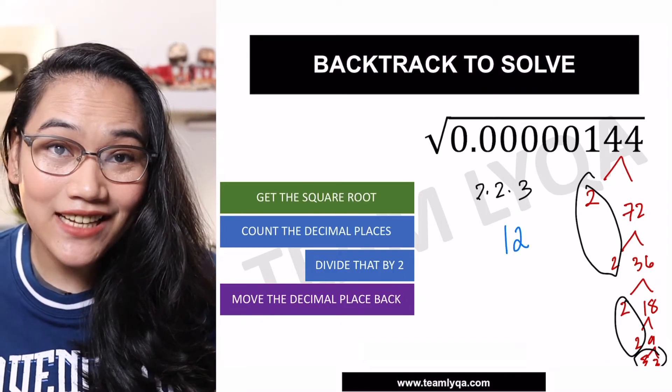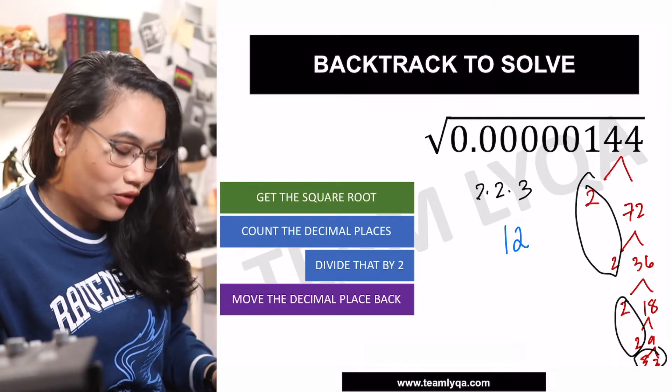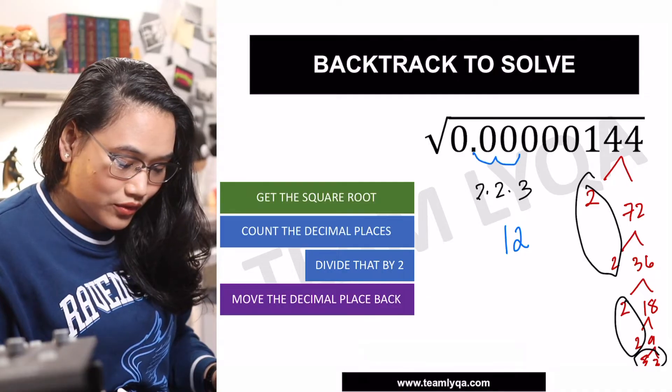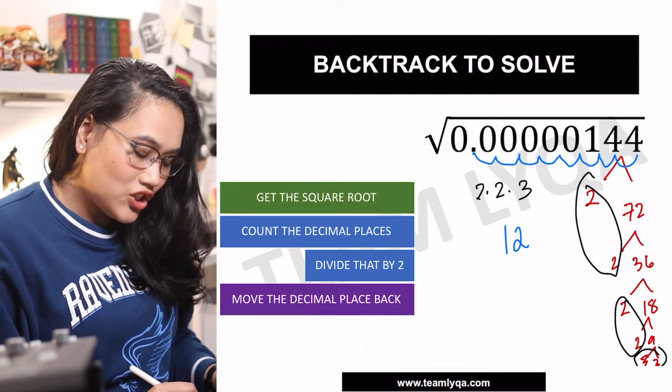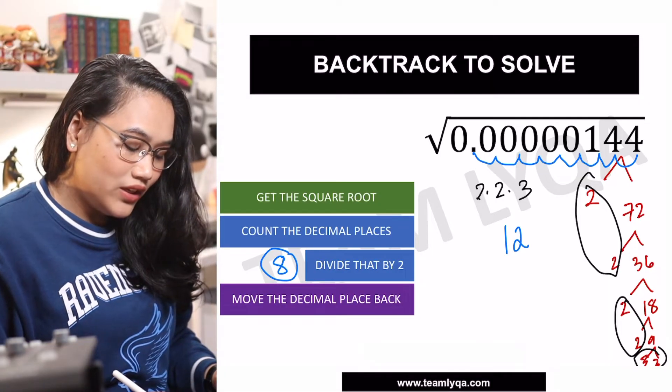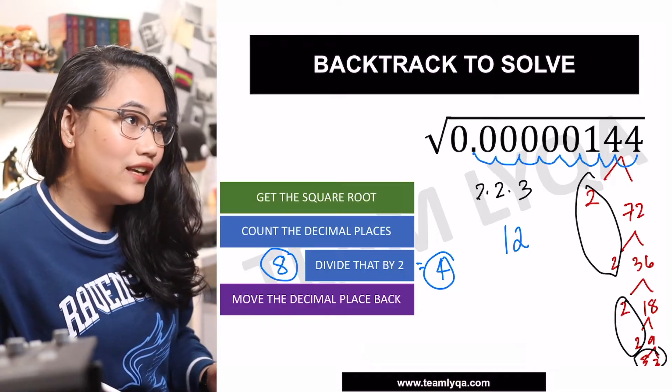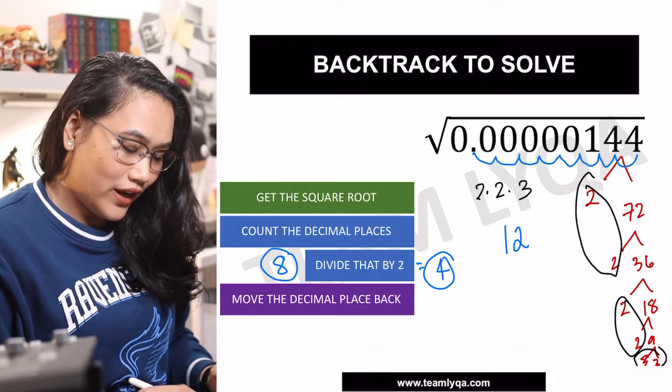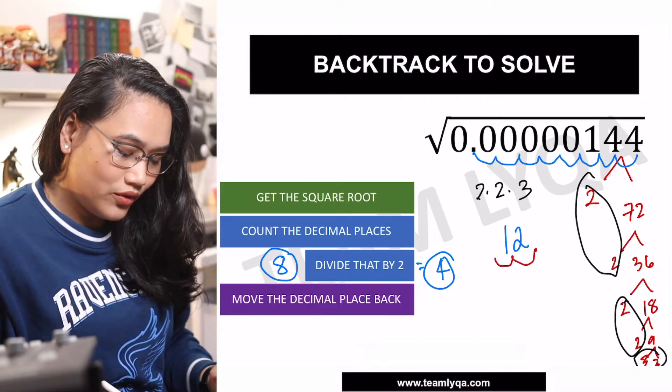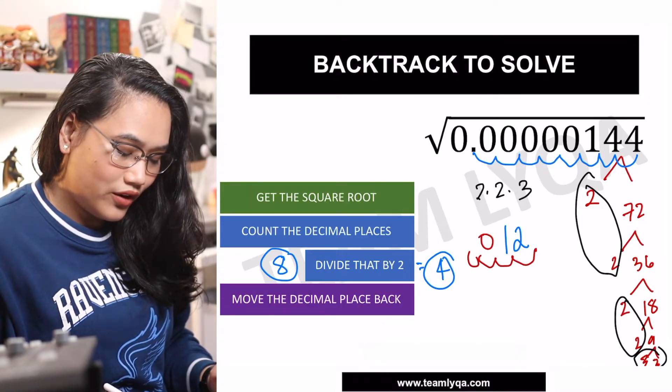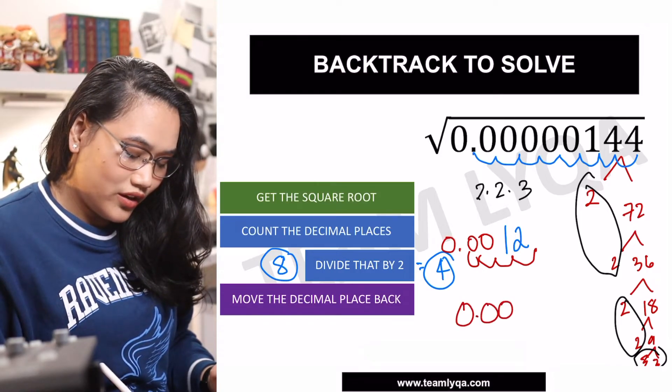That's not the final answer yet. Our next step is to count the decimal places to form 144. You have 1, 2, 3, 4, 5, 6, 7, 8. So it's 8 divided by 2 is 4. And then that 4, we'll just move the decimal point from 12. So we're going to have the decimal point right here. Move it 1, 2, 3, and 4. The answer is 0.0012.